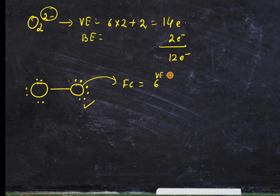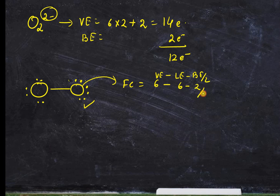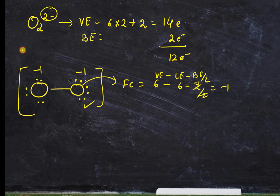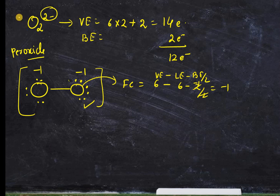Now let's count the formal charge on each oxygen using the formula: valence electrons minus lone pair electrons minus (bonding electrons divided by 2). Valence electrons = 6, lone pair = 6, bonding = 2 divided by 2 = 1, so 6 − 6 − 1 = minus 1. Both oxygens have a formal charge of minus 1, so the overall charge is 2 minus. This is the correct Lewis dot structure for peroxide. I hope this is clear how to draw the Lewis dot structure for all three kinds of oxides.